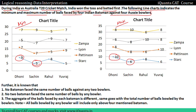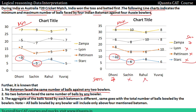Further, it is known that no batsman faces the same number of balls against any two bowlers. For example, if Sachin faces 7 balls against Zampa, then he cannot face 7 balls against Patinson, Lion, or Stark. Similarly, no two batsmen face the same number of balls bowled by any particular bowler.